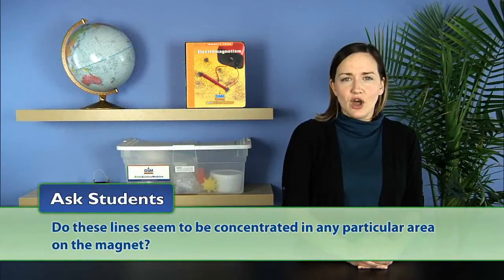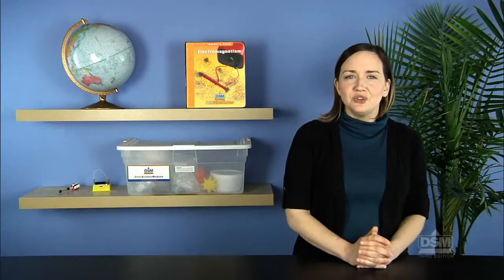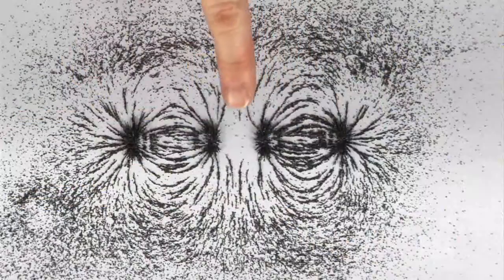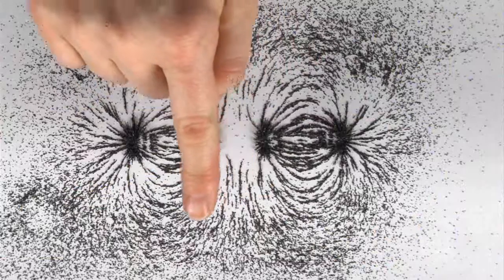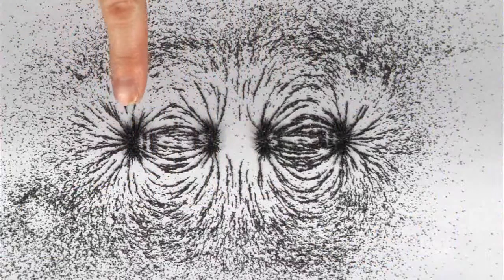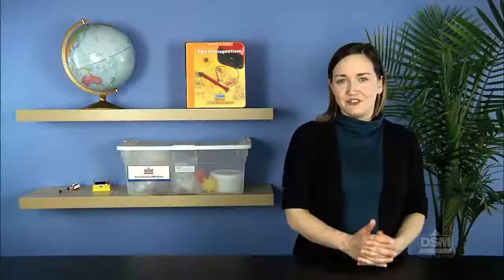Then ask students, do these lines seem to be concentrated in any particular area on the magnet? They will see that the field lines are closer together at the ends of the magnets and that the closer together the field lines are, the stronger the magnetic field. The magnetic field, therefore, is strongest at the magnets' ends.